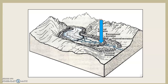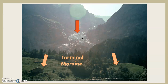There can only be one terminal moraine, but there can be multiple recessional moraines going up a valley as the glacier pauses in its retreat. The green arrows are pointing at lateral moraines. Lateral moraines are formed along the sides of the glacier and indicate the former width of the glacier — in other words, how wide the glacier was.